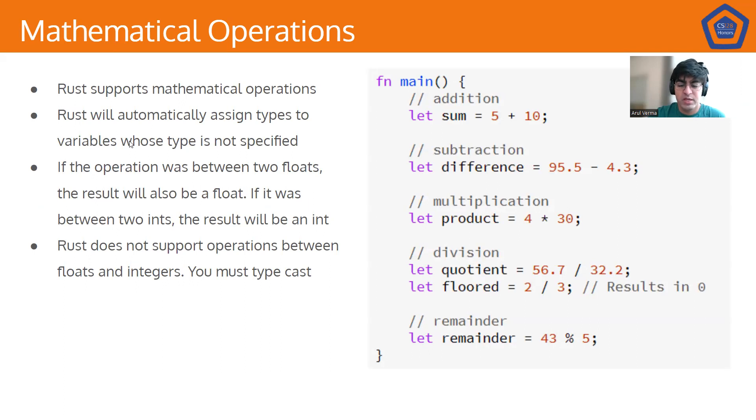So, Rust supports mathematical operations, and they're all the default operation signs that you know of. You can see on the right, sum is plus, difference is minus, multiplication is the star, division is the slash, and remainder or quotient is just the percentage sign. And Rust automatically assigns types to variables whose type is not specified. So sum equals 5 plus 10, both these are integers, so sum is by default considered an integer of type i32.